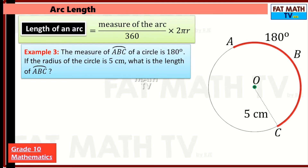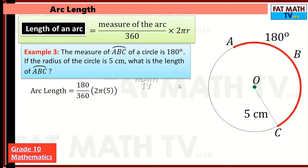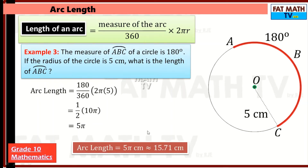Another example: the measure of arc ABC is 180 degrees — what you can see is a semicircle. If the radius of the circle is 5 centimeters, what is the length of the semicircle? Using the same formula, 180 over 360 is one half. Then 2π times 5 is 10π, and one half of 10π is 5π. So the arc length is 5π centimeters.